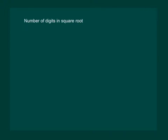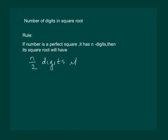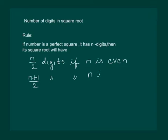We can find the number of digits in the square root of a number before finding the square root. We state a rule which says that if a number is a perfect square and it has n digits, then its square root will have n/2 digits if n is even, and (n+1)/2 digits if n is odd.